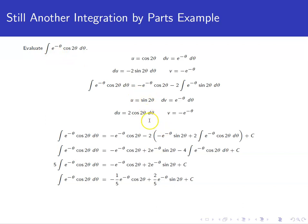Let u equal sine 2 theta. du is 2 cosine 2 theta d theta. And again, antiderivative for e to the minus theta gives us a negative e to the minus theta. So that's what our v is again.